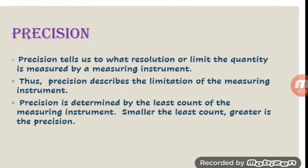The next term is precision. What is precision? Precision tells us to what resolution or limit the quantities are measured by a measuring instrument — it represents the limit of the resolution of an instrument. Precision is determined by the least count of the measuring instrument. Lesser the least count, greater is the precision.